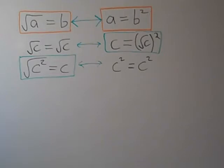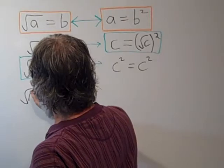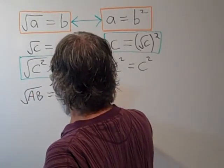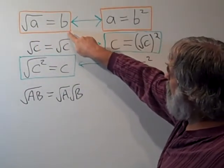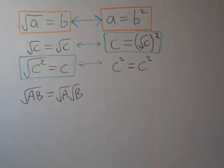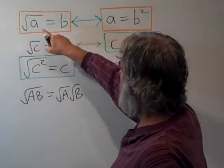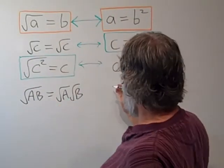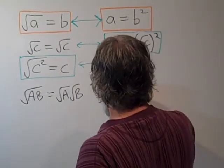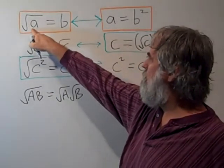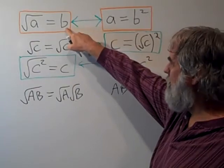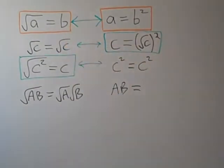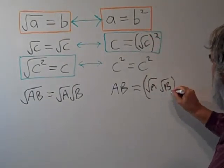Another property I'd like to show at this time: using these properties, we'd like to show what the square root of A times B — that it can always be written as the square root of A times the square root of B. Let's cast this into the role of the square root of a equals b. In this case, what is a? A is the thing under the square root, which is capital A times capital B. Whatever is on the other side is b, so radical A times radical B is equal to b. So now b is squared: it's the quantity radical A times radical B, squared.